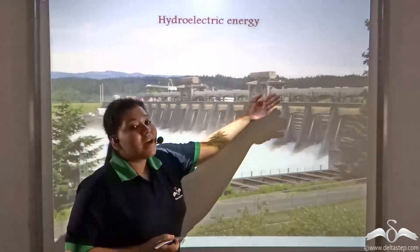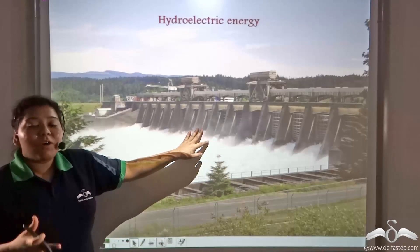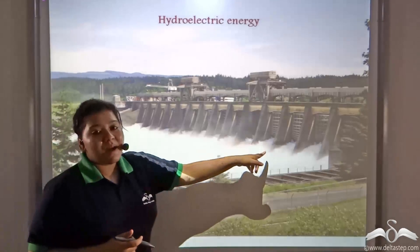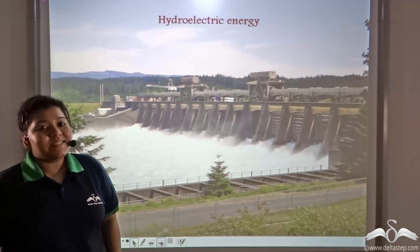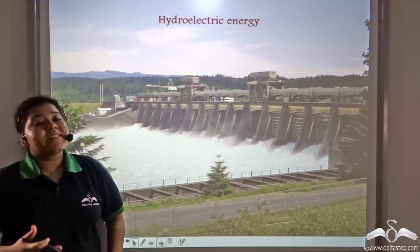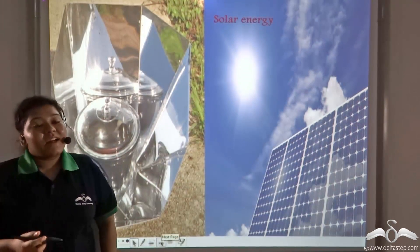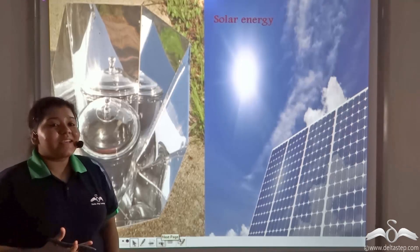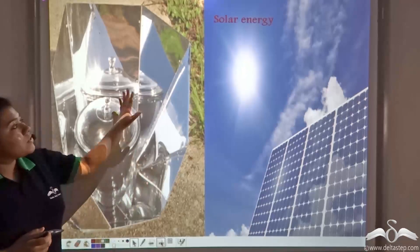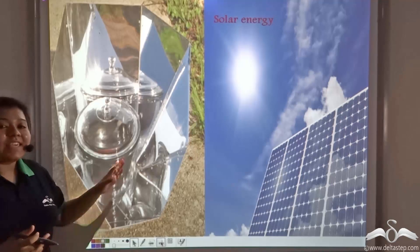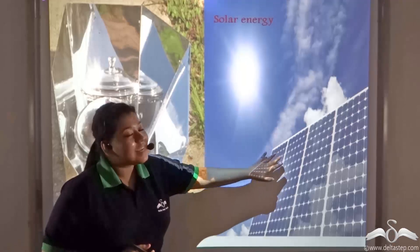Water is collected behind a dam built across a river, then released at very high pressure into pipes. This high-pressure water turns turbines connected to generators that produce electricity. Another source of energy that can be utilized is solar energy. Solar energy can be used directly for heating, and this heating energy can also be converted into electrical energy.